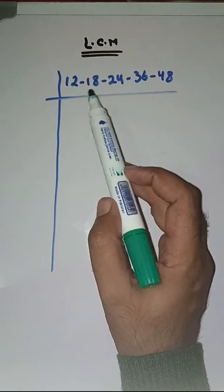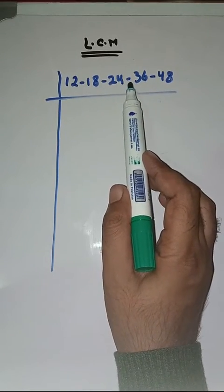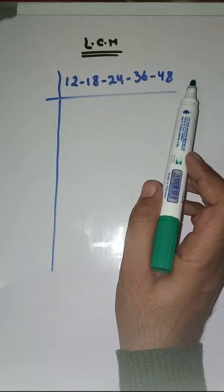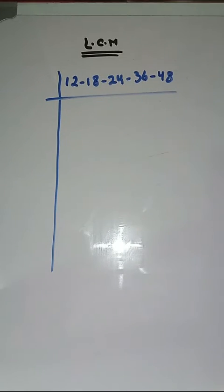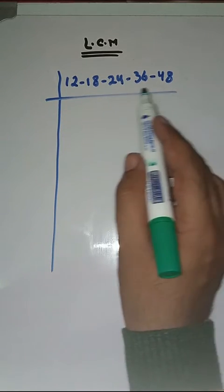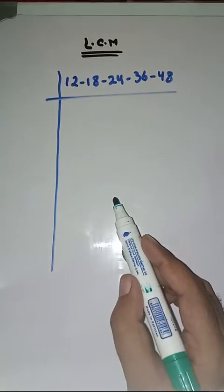We have to find LCM of 12, 18, 24, 36 and 48. So what will we do? First we find prime factors of these 5 numbers and then we find LCM.